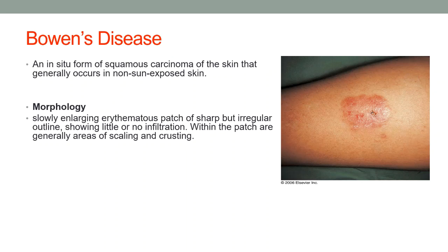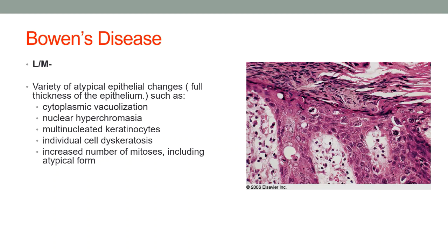Bowen's disease is an in-situ form of squamous cell carcinoma of the skin that generally occurs in non-sun-exposed skin. Clinically it is a slowly enlarging erythematous patch with sharp but irregular outline, with areas of scaling or crusting. On light microscopy, there is a variety of atypical epithelial changes in the full thickness of the epithelium, including cytoplasmic vacuolization, hyperchromasia of nuclei, multinucleation of some keratinocytes, dyskeratosis and atypical mitoses.